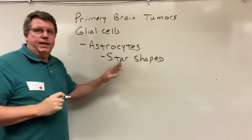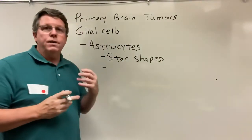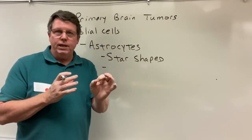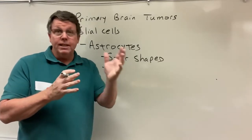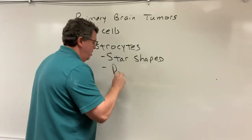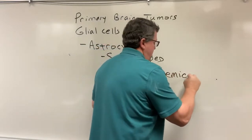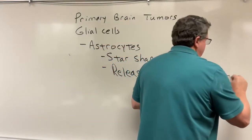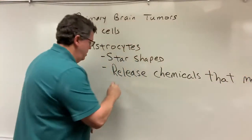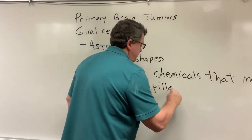What do astrocytes do? The first thing is they're part of something called the blood-brain barrier. As capillaries pass by the brain, we don't want substances in the capillaries to necessarily go into the brain. So the astrocytes release a chemical that makes the capillaries impermeable to certain substances.